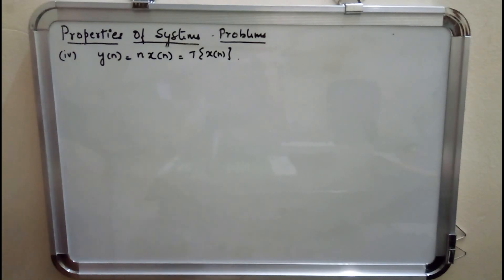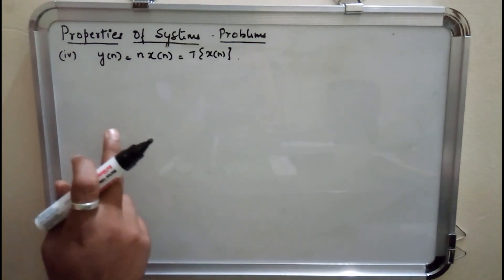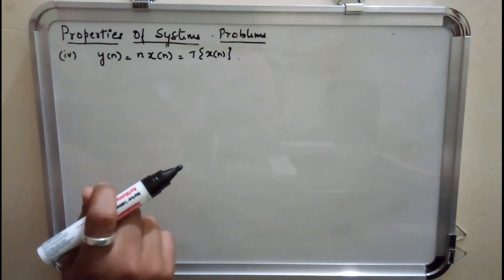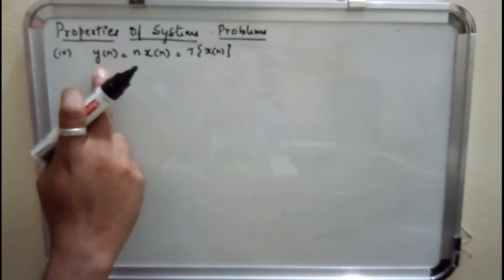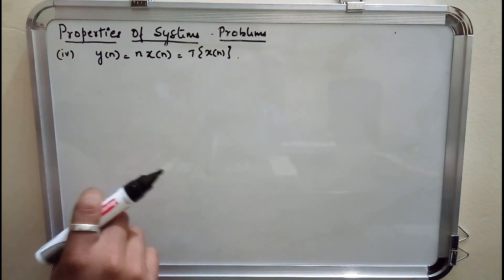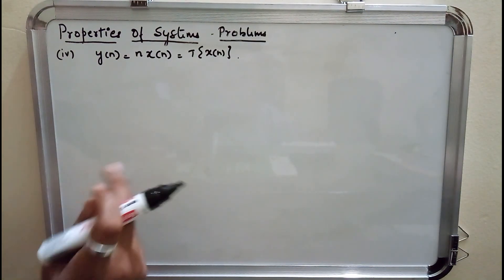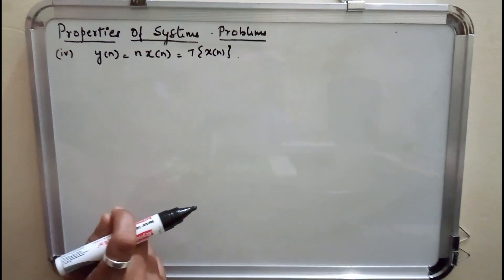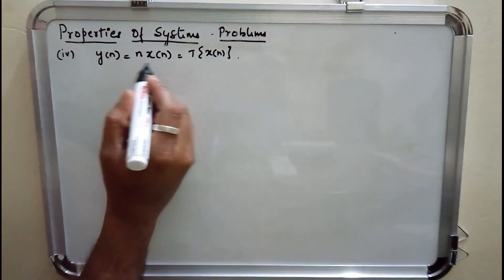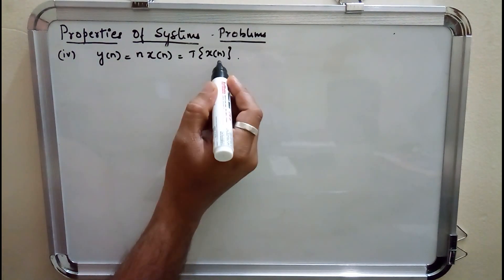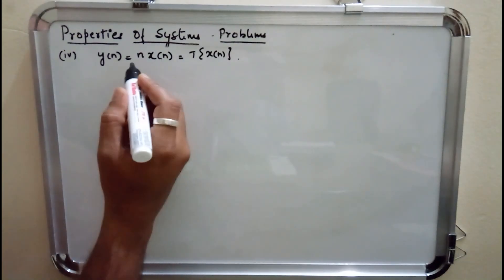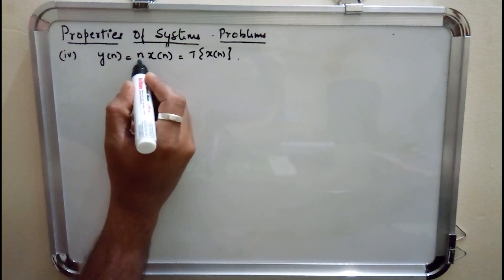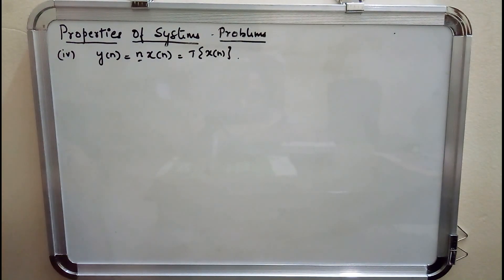In my previous lecture we solved many problems with regard to the properties of systems when input and output relationships are given. Continuing with the same, here we have y(n) as output represented by a transformation on input x(n), given by n into x(n). The transformation which took place is multiplication by a factor n.